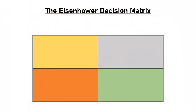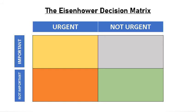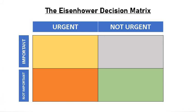Creating a matrix involves making a two by two square with four quadrants, where on the columns are urgent and not urgent, while on the rows are important and not important.